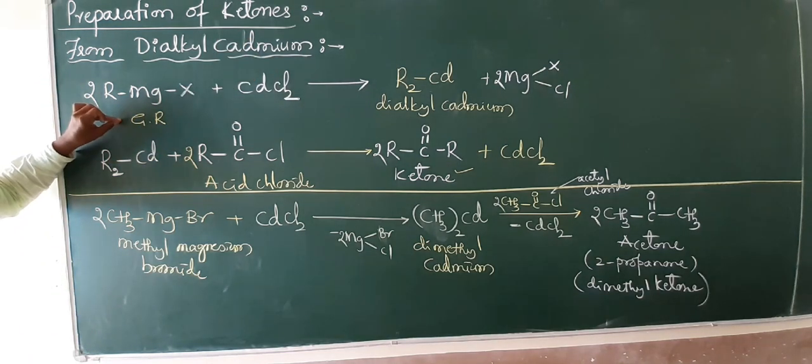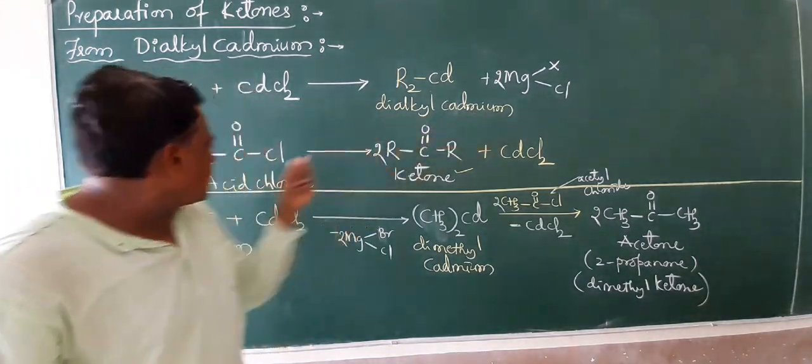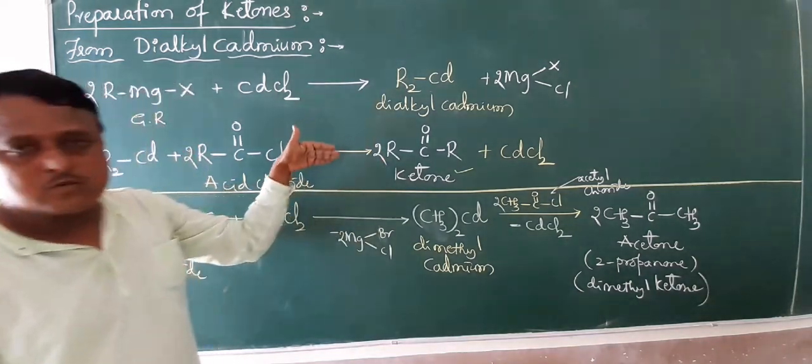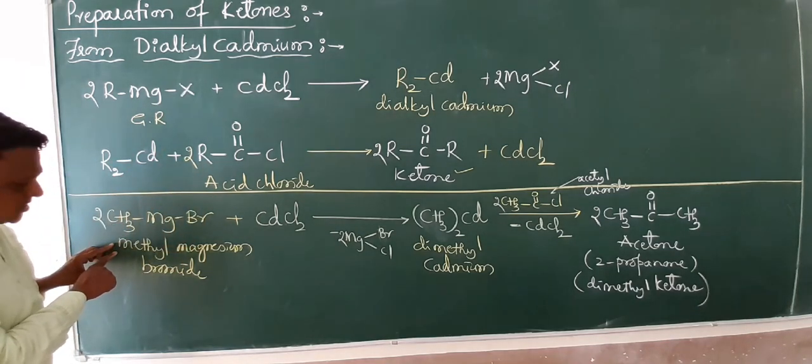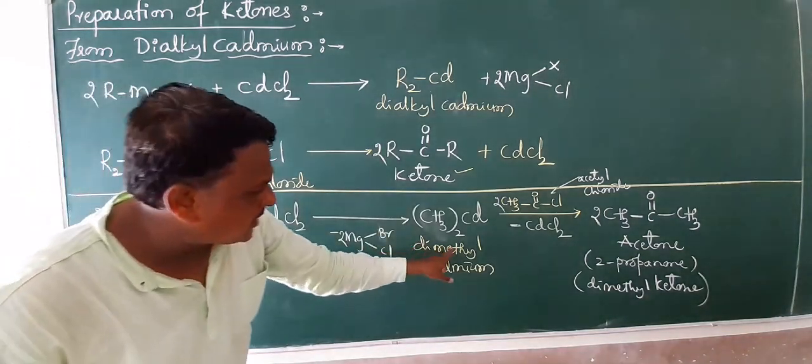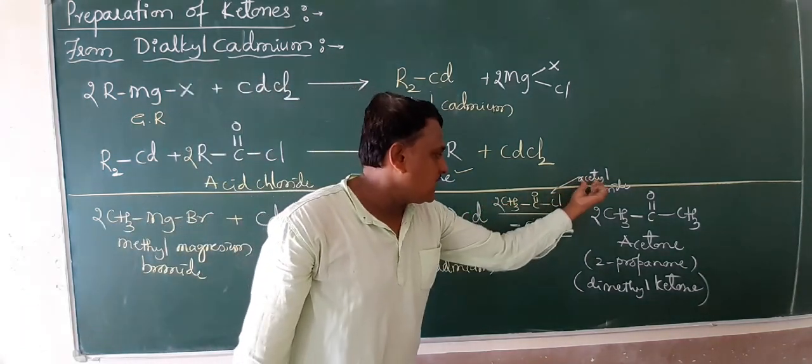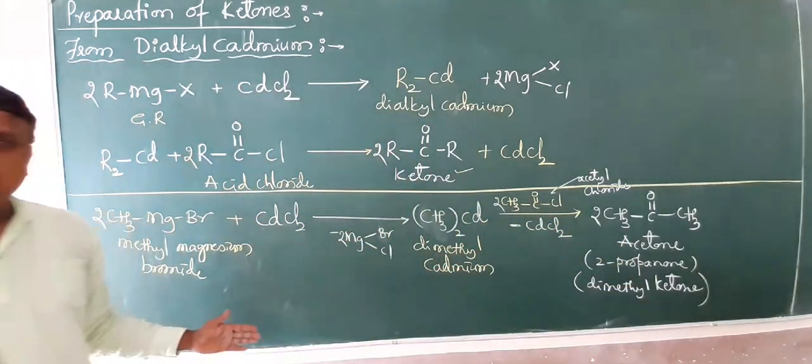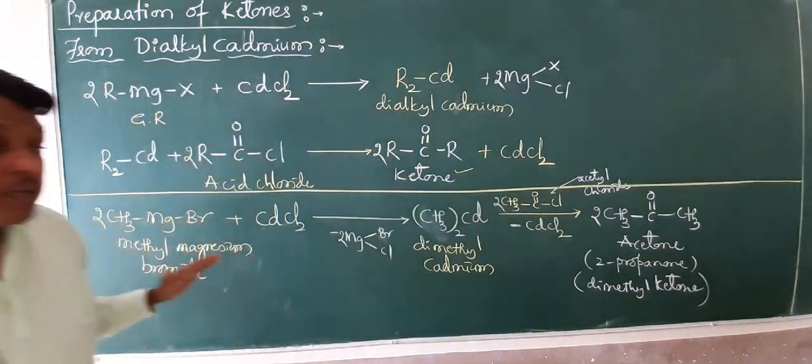I repeat, when Grignard reagent reacts with cadmium chloride to form dialkyl cadmium, and then this dialkyl cadmium reacts with acid chloride to form ketone. Methyl magnesium bromide reacts with cadmium chloride to form dimethyl cadmium, then it reacts with acetyl chloride to form acetone. You can change different acid chlorides to get different corresponding ketones. This is a very helpful reaction.